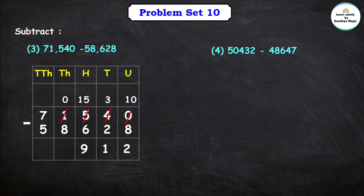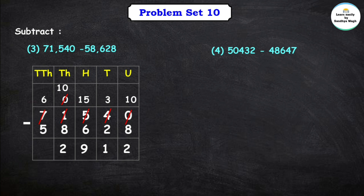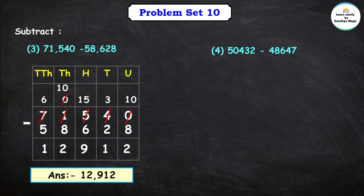The thousands place now has 0, so we borrow from the ten-thousands place. We borrow 1 from 7, so the ten-thousands place becomes 6. The thousands place becomes 10. From 10 we subtract 8 and get 2. Now in the ten-thousands place we have 6 and 5. We subtract 5 from 6 and get 1. So here our final answer is 12,912.